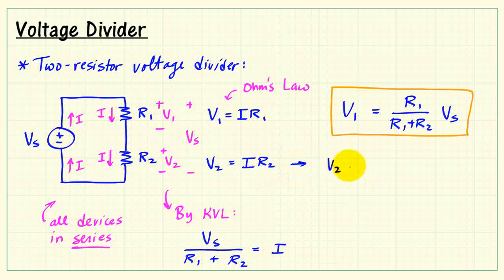And in a similar way we can write V2 is given by the resistor ratio R2 divided by R1 plus R2.